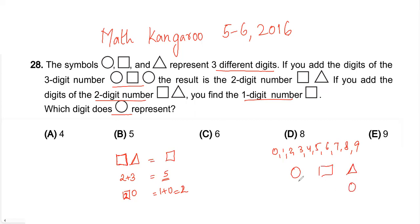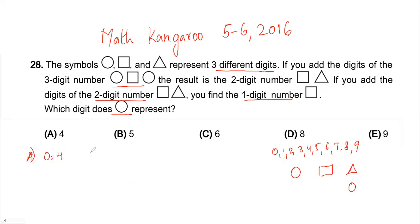Now we know the triangle is zero. We use the method of elimination. Suppose option A: the circle is four. Then four plus square plus four should give square-zero. Four plus four is eight, and if you add two you get ten — but then two and one are not the same digit, so A is not the answer.